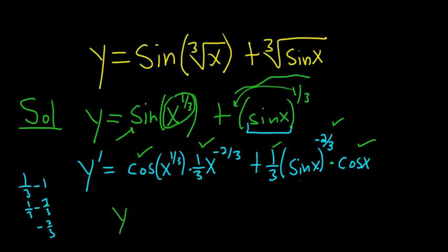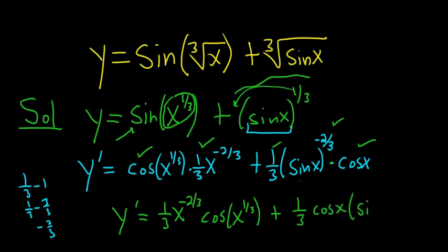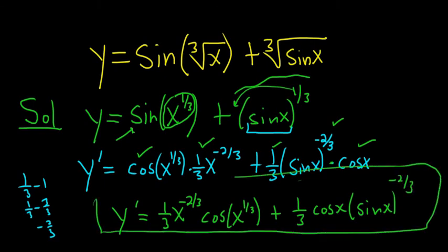So that's the final answer. I guess what you could do to make it look better is maybe put the number up front. So 1 third x to the negative 2 thirds cosine of x to the 1 third plus 1 third, I'll put the cosine in the front, cosine x, and then sine x to the negative 2 thirds. So that is the final answer. All I did here was put the cosine in the front and put the 1 third in the front. Hope that made sense.